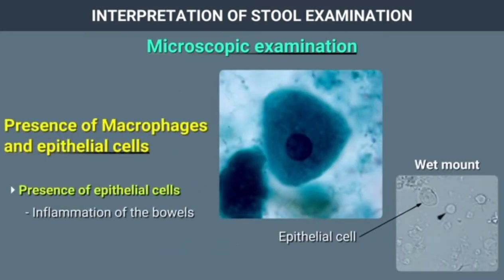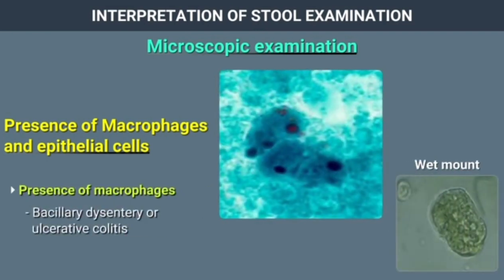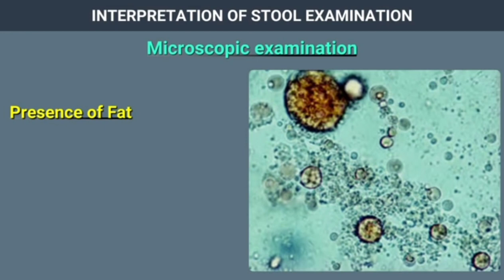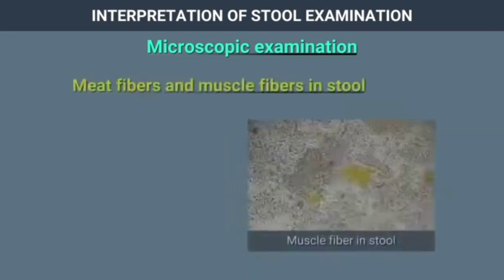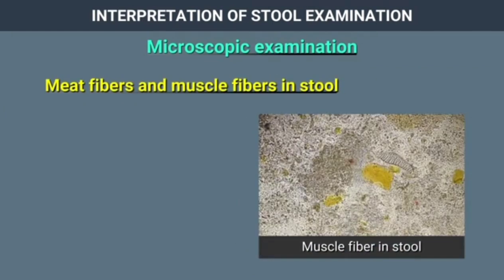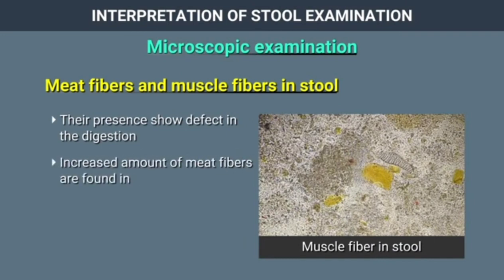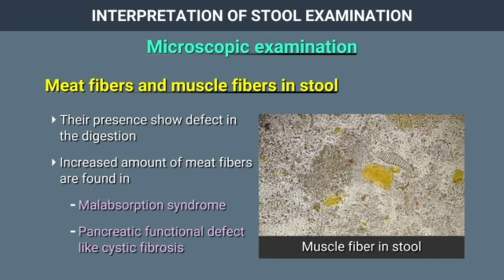Presence of macrophages and epithelial cells: Presence of epithelial cells is indicative of inflammation of the bowels. Presence of macrophages is indicative of bacillary dysentery or ulcerative colitis. Fat in stool suggests the possibility of malabsorption, deficiency of pancreatic digestive enzymes, or deficiency of bile. Meat fibers and muscle fibers seen in stool indicate a defect in digestion; increased amounts can be found in malabsorption syndrome and pancreatic functional defects like cystic fibrosis.